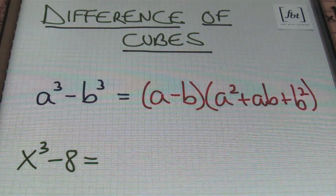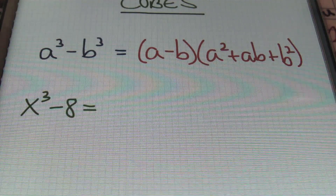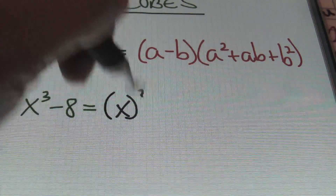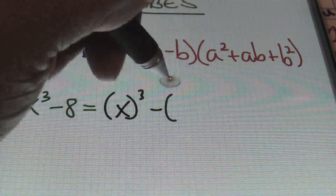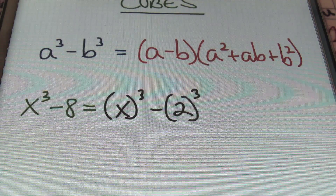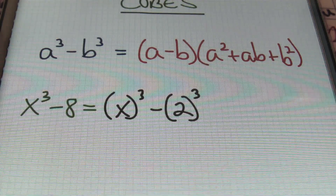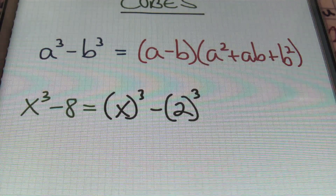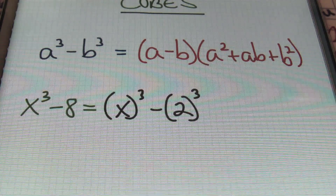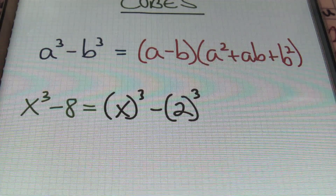For example, let's say that I have the following: x cubed minus 8. What's being cubed is the variable x, minus 2 which is being cubed, because 2 times 2 times 2 is 8. I strongly encourage you to memorize your perfect cubes, at least from 1 cubed all the way up to 10 cubed. Know what those perfect cubes are, because a lot of this is about recognition.